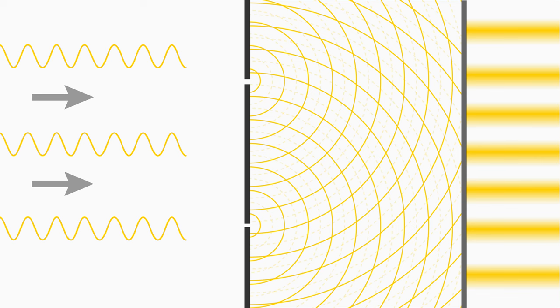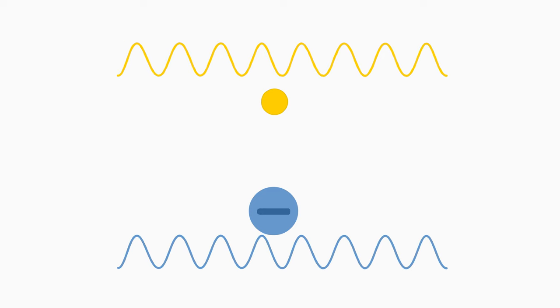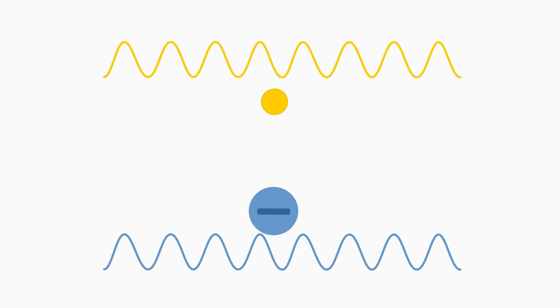Just like light, electrons are also able to generate an interference pattern in the double-slit experiment. This observation that light and matter can behave in a wave-like and particle-like manner, depending on the situation, is called wave-particle duality.